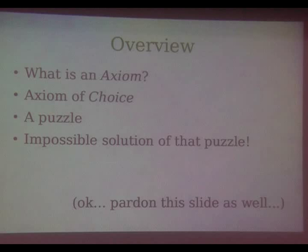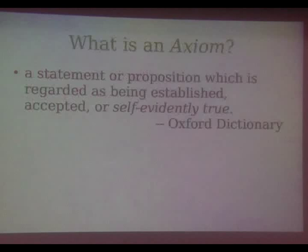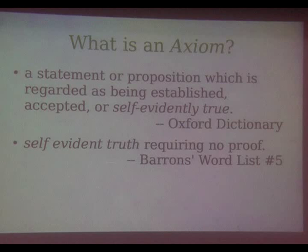So, what is an axiom? The Oxford Dictionary defines axiom as a statement that is evidently true — true by itself and there is no question about it. And if you are giving the GRE, then Barron's word list says that an axiom is a self-evident truth which requires no proof. But the technical interpretation is pretty much different.